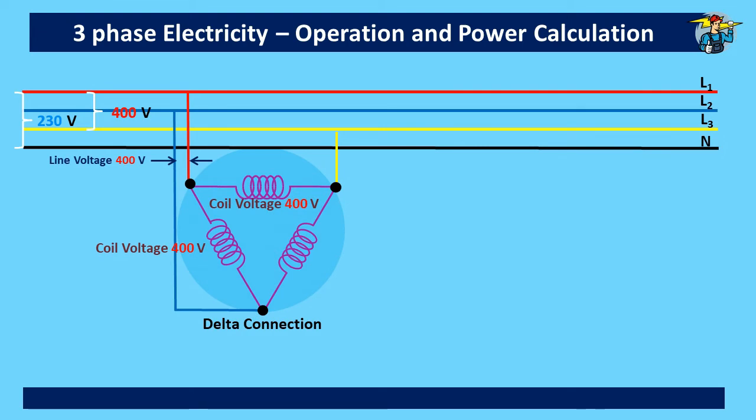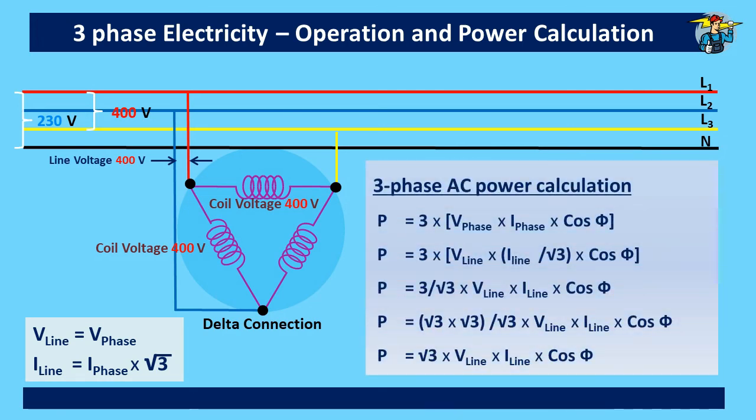Let's consider delta connection for calculation now. Here you see V_line = V_phase, but I_line = √3 × I_phase. Let's use single phase equation on three individual phases and multiply it by 3 as done previously for star connection. So we get P = 3 × V_phase × I_phase × cos φ. To get the line condition, V_phase can be replaced directly with V_line, and I_phase will be replaced with I_line/√3. When 3 on top is written as √3 × √3, one √3 on top will cancel off with the bottom one as happened previously in star connection.